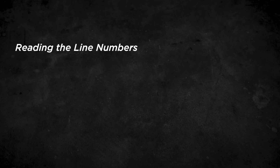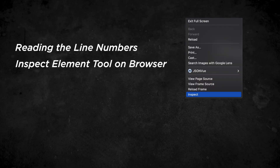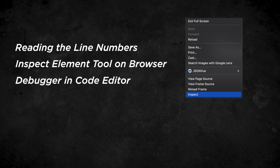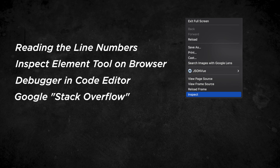From a high level, to debug well you need to know things such as reading the line numbers when you make mistakes, using the inspect element tool in Chrome if you're building for the web, or using a debugger in your code editor, or just Googling Stack Overflow when you encounter an unfamiliar error. I know it sounds elementary right now, but knowing these tools is going to save so much time when learning how to code.